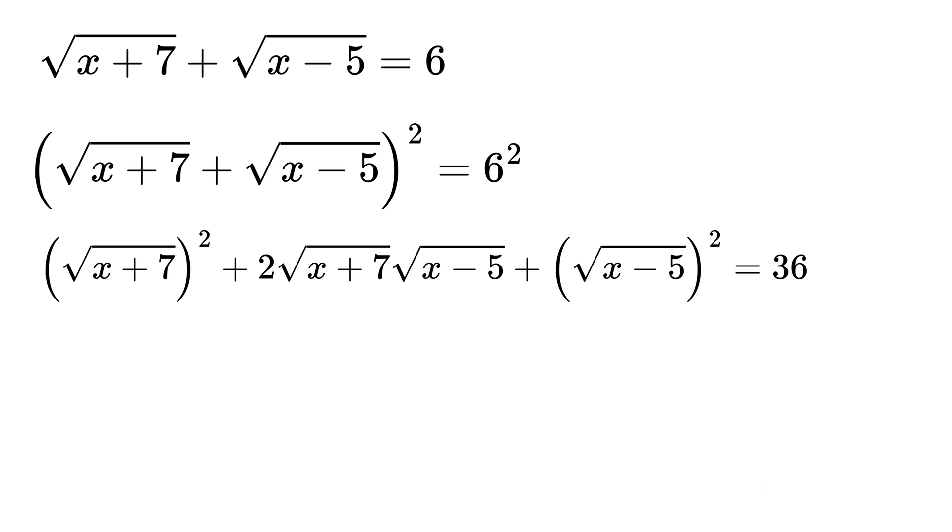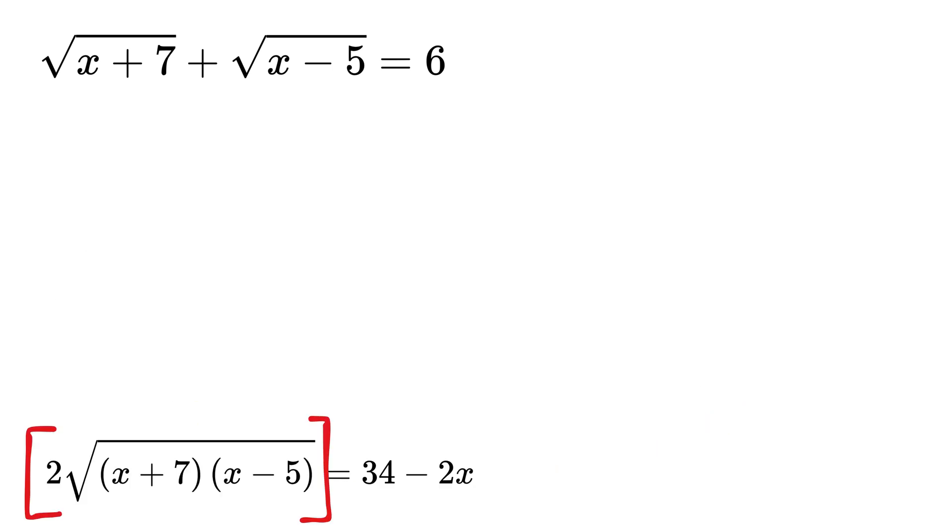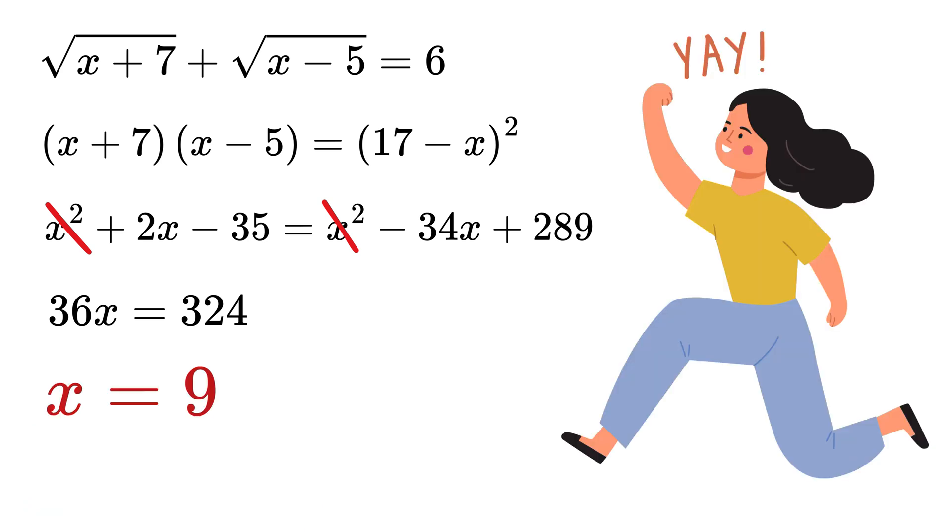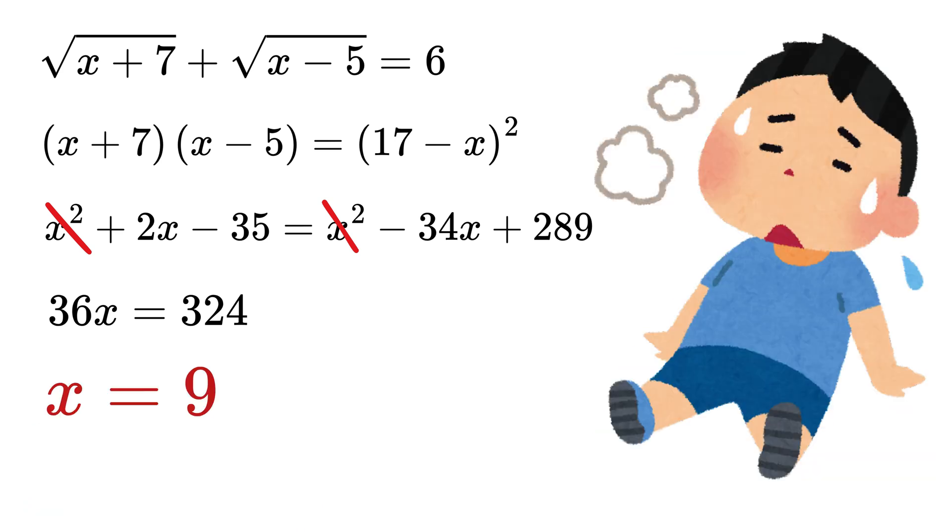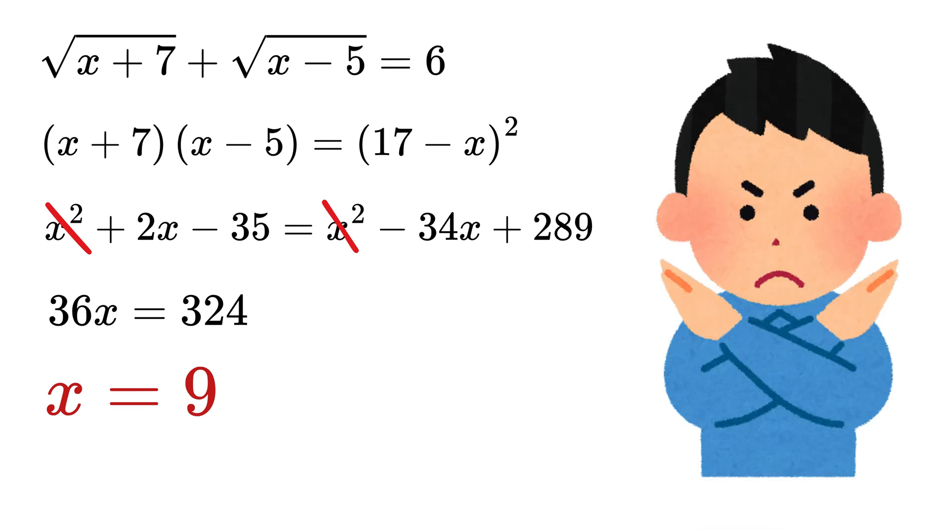But now can you see that we have to first simplify all these terms and take them to the right side? And in order to remove this square root, we have to again square both sides and then simplify further. There's no harm in doing that, we can do it, but it becomes quite long and messy. You'll end up squaring twice, expanding big expressions, and simplifying again, which is not very elegant.